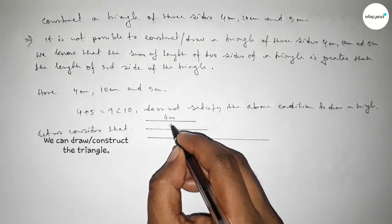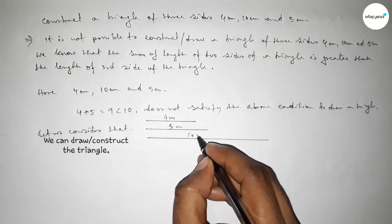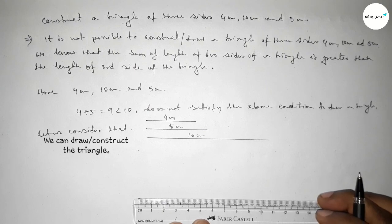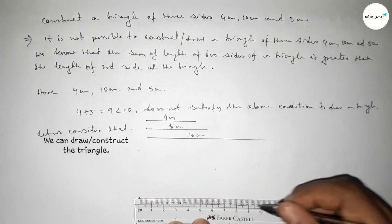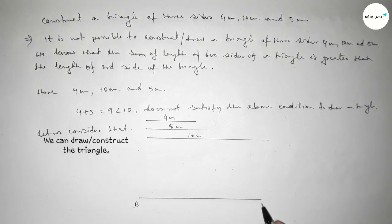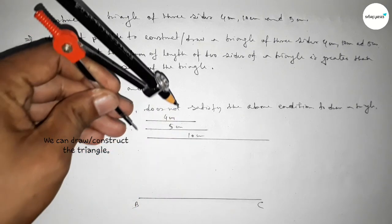This is 4 centimeter, 5 centimeter, and this one 10 centimeter. Now again we have to draw here a line of length 10 centimeter. So this is 10 centimeter line, taking here point B and here C.